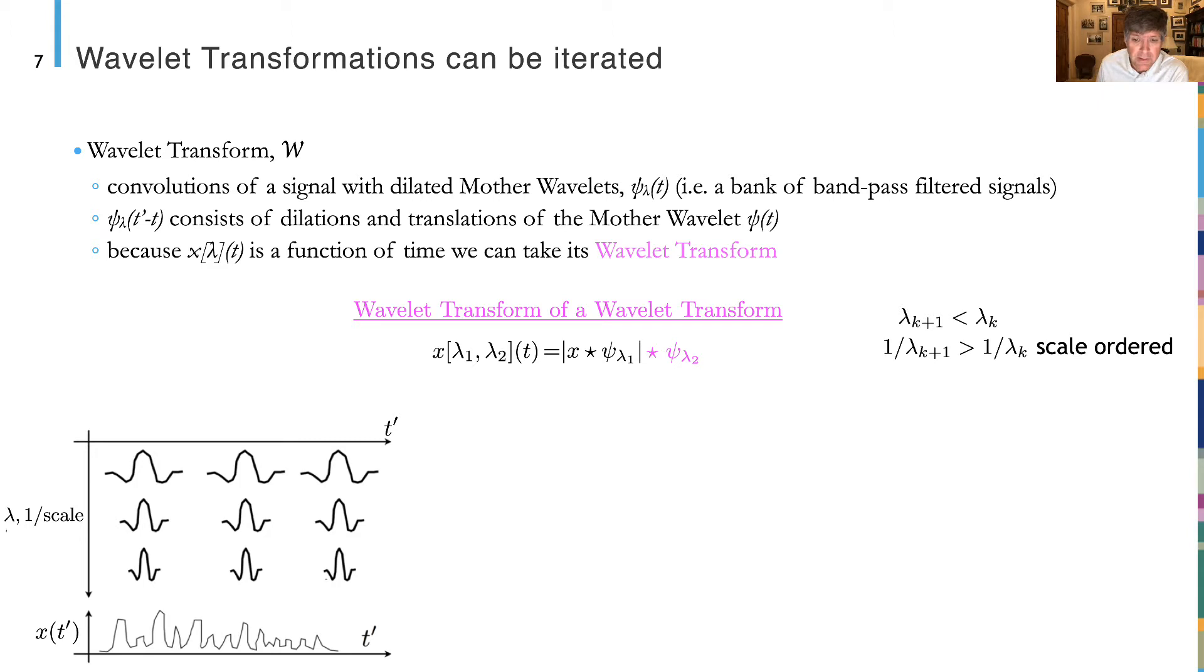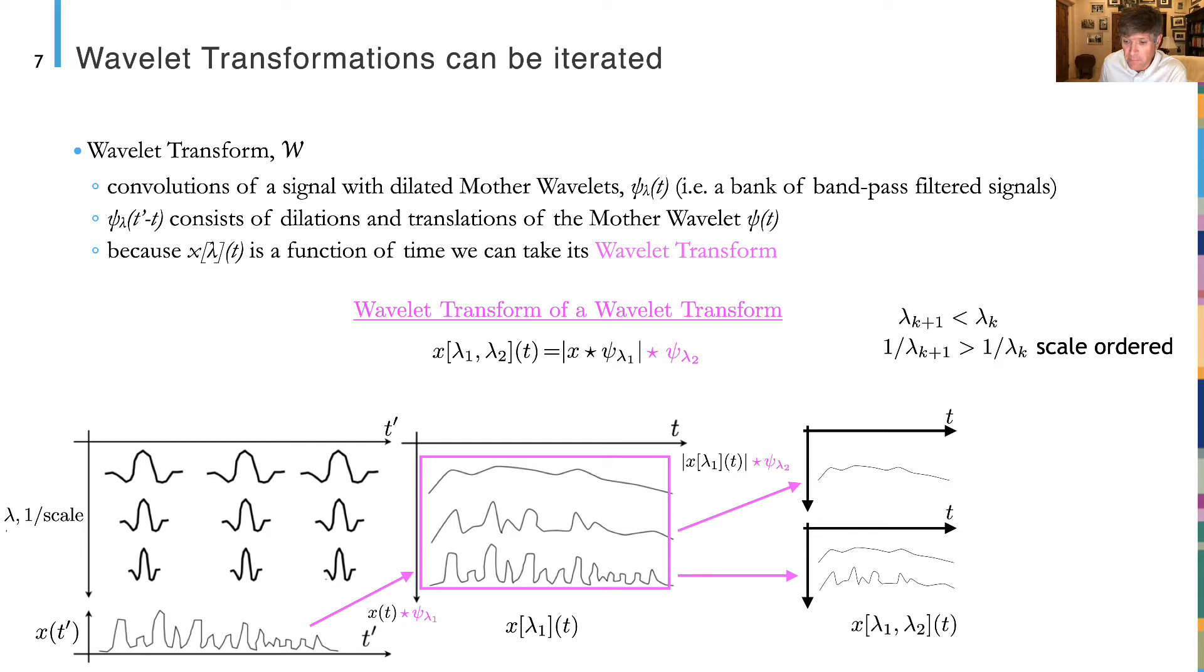Stefan decided that he had lemons so he would make lemonade - he had the time dependence so that he could iterate this transformation. After taking the transformation once, you can take it a second time, and a third time, and so on. But unless you have things that are scale ordered, in terms of decreasing wave number, you find that you have little contribution to that transformation. You can only take the transformation with the largest wavelets of the ones that have been taken of the median, and so on.